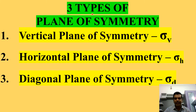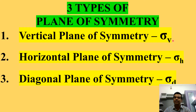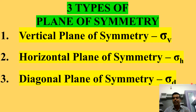There are three types of plane of symmetry: vertical plane of symmetry (represented by σv), horizontal plane of symmetry (represented by σh), and diagonal plane of symmetry (represented by σd).